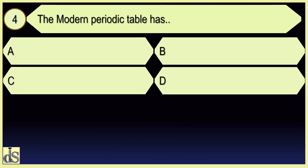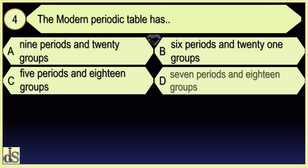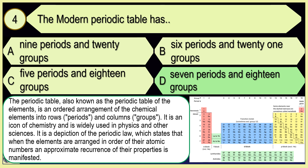The modern periodic table has 7 periods and 18 groups.